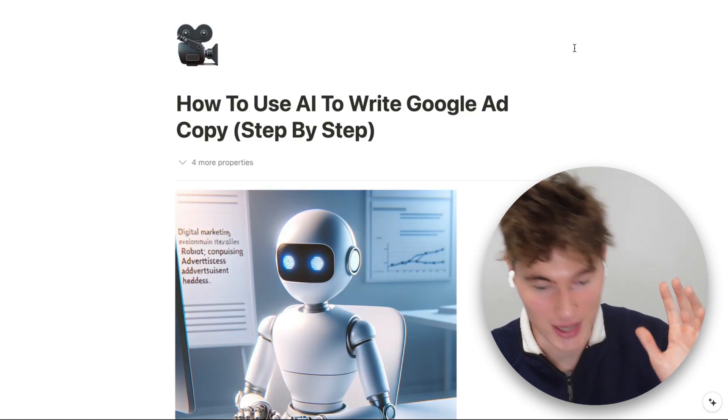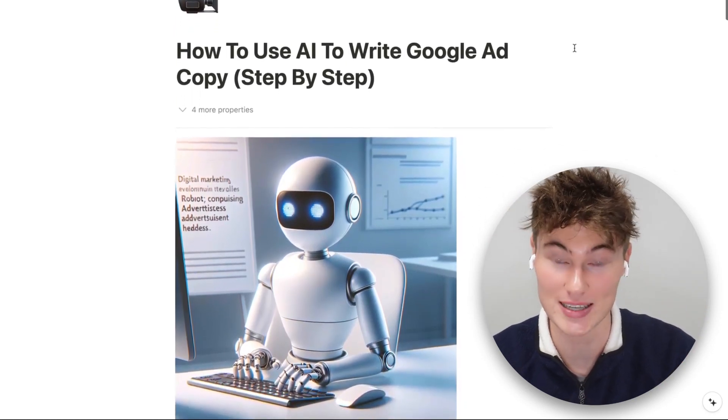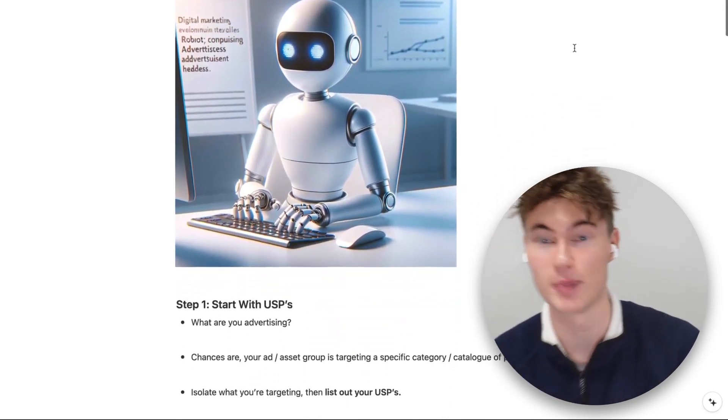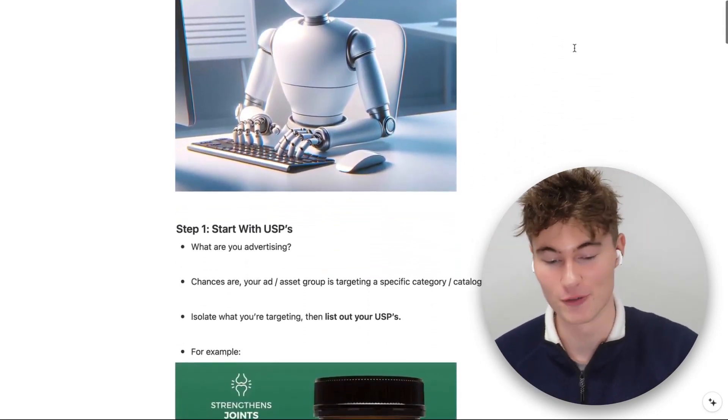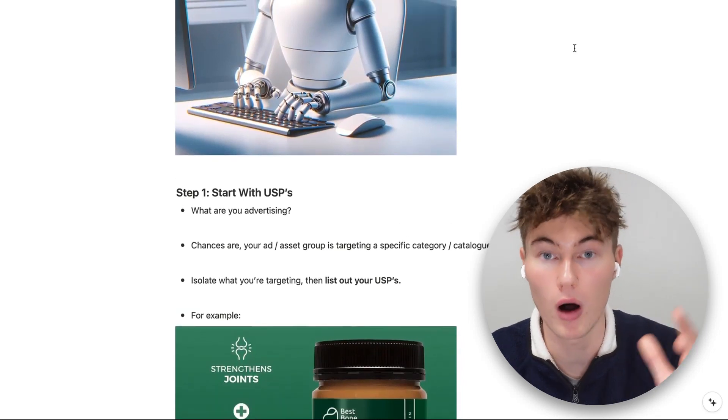Here is the document: how to use AI to write Google ad copy, step by step. First things first, step one — we've got to figure out what we are advertising. Everything starts with the product. The ad copy is about the product, it's selling the click, and what sells the click is the value the product provides. That's the mechanism we're leveraging here.